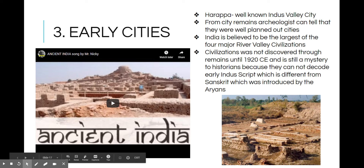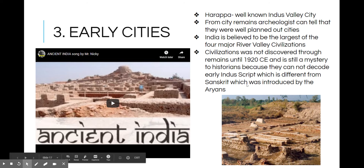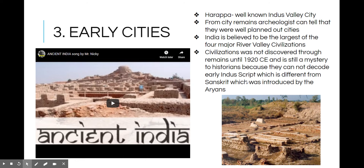Here is your extra credit opportunity: if you learn a song by Mr. Nicky that goes over the entirety of Indus civilization and send me a video of yourself singing it, you will receive a hundred project grade. Now, let's talk about the two well-known early cities. Harappa was a well-known Indus Valley city; archaeologists can tell they were well-planned cities laid out in a grid-like fashion, almost like Manhattan. India is believed to be the largest of the four major river valley civilizations.